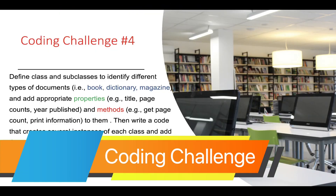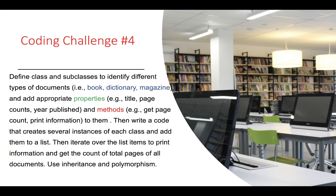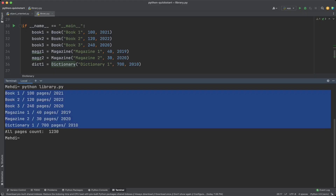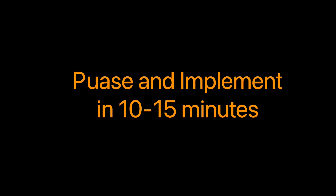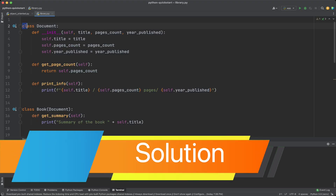Coding challenge: implement an application for a library to manage documents. Define a class and subclasses to identify different types of documents such as books, dictionaries, and magazines. Add appropriate properties like title and page count, and methods like get_page_count and print_information. Write code that creates several instances of each class, adds them to a list, iterates over the list to print information, and gets the total page count of all documents. Use inheritance and polymorphism.